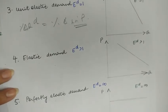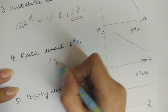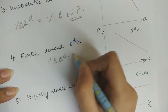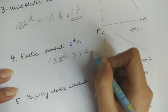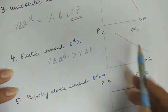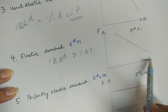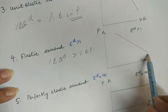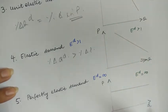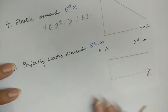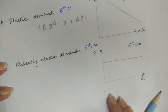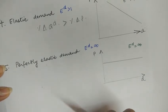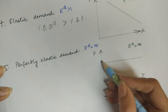Elastic demand is a situation where the percentage change in quantity demanded is greater than the percentage change in price of the commodity. As you can see from the diagram, the slope is very flat compared to the above situations.